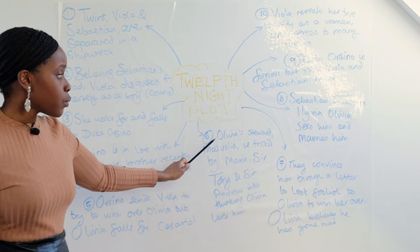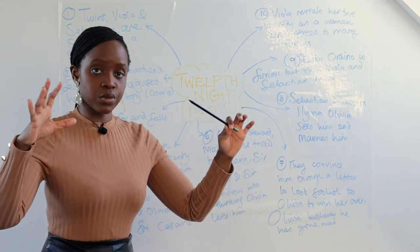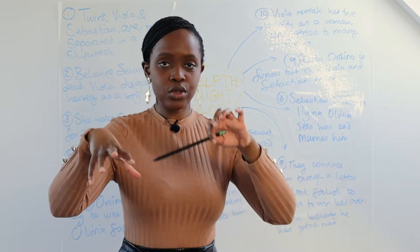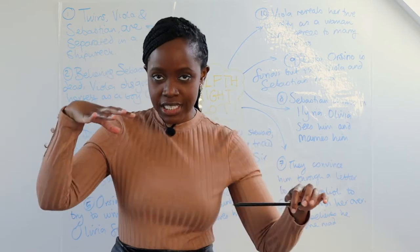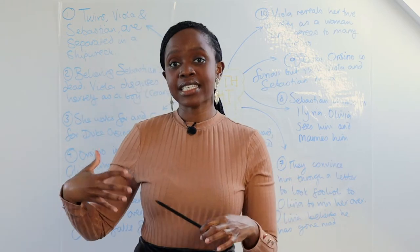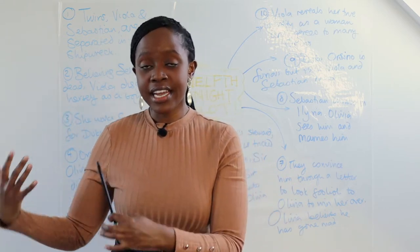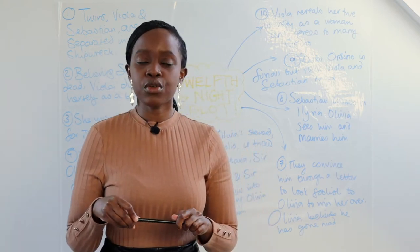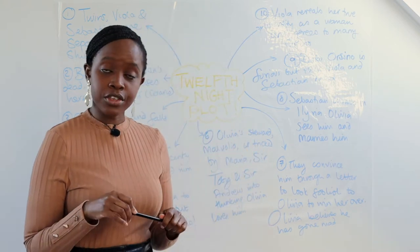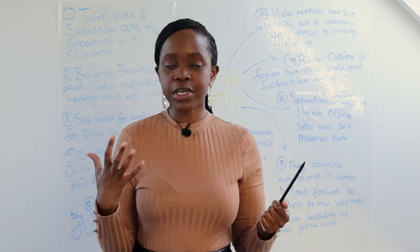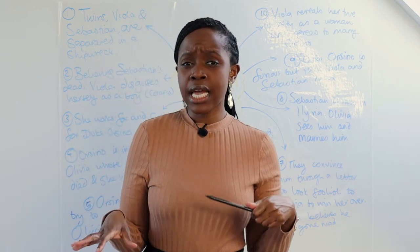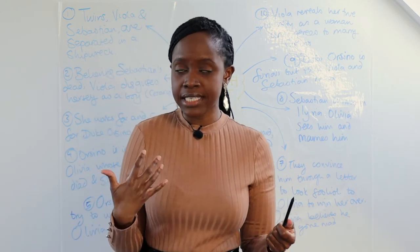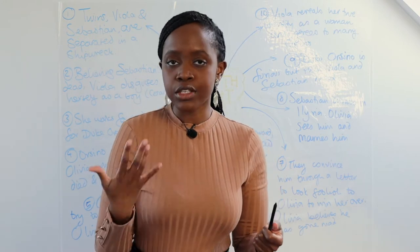Within Olivia's household, there is a lot of politics among the servants. Olivia has a lady-in-waiting called Maria and a pompous steward called Malvolio. Malvolio thinks he is better than the other servants, and Maria really hates him, so she decides to play a trick on him.